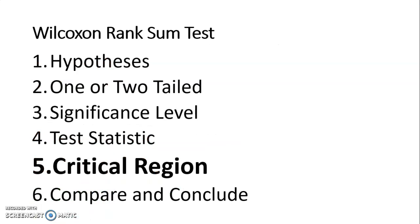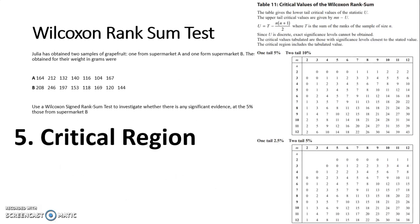So next we have the critical region. And we need to find what that critical region is. So we are going to use the critical values of the Wilcoxon Rank's sum. This is table 11 in your formula booklet. It is the last table in there. You will notice that your U formula is at the top if you need it for calculating your test statistic. And it also says on that first line, the table gives the lower tail critical value. This is why we always use the lower of the two U values because we are only given the lower critical value.